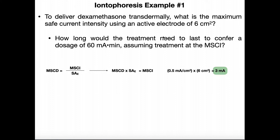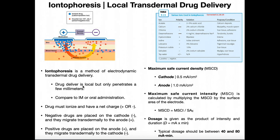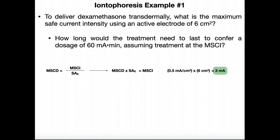How long would the treatment need to last to confer a dosage of 60 milliamp-minutes, assuming we treat at the maximum safe current intensity of 3 milliamps? Dosage is intensity times time, so time equals dosage divided by intensity: 60 milliamp-minutes divided by 3 milliamps equals 20 minutes. So we'd have to run this treatment for 20 minutes. Note that 60 milliamp-minutes is right in the 40–80 milliamp-minutes range, which is good.